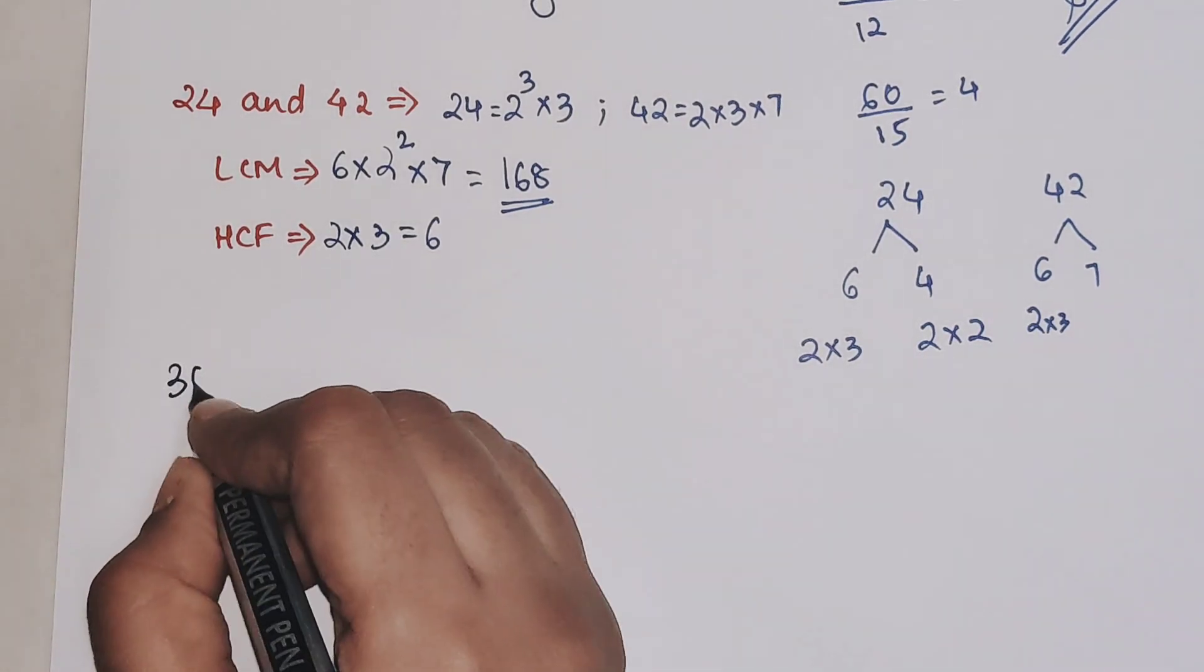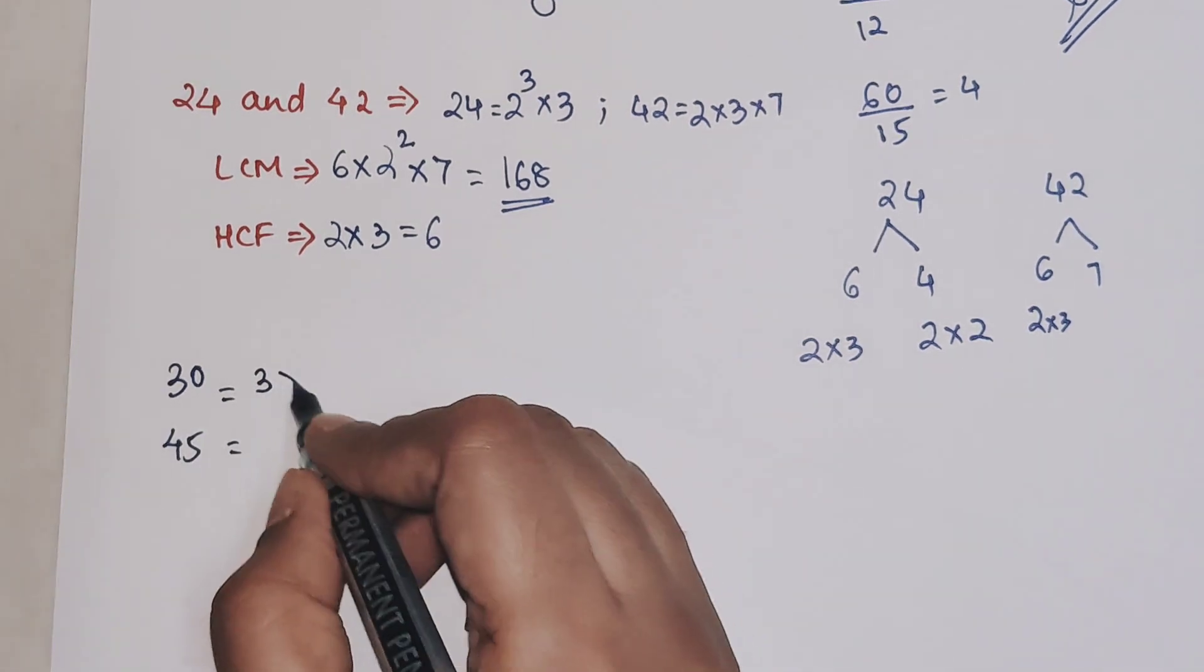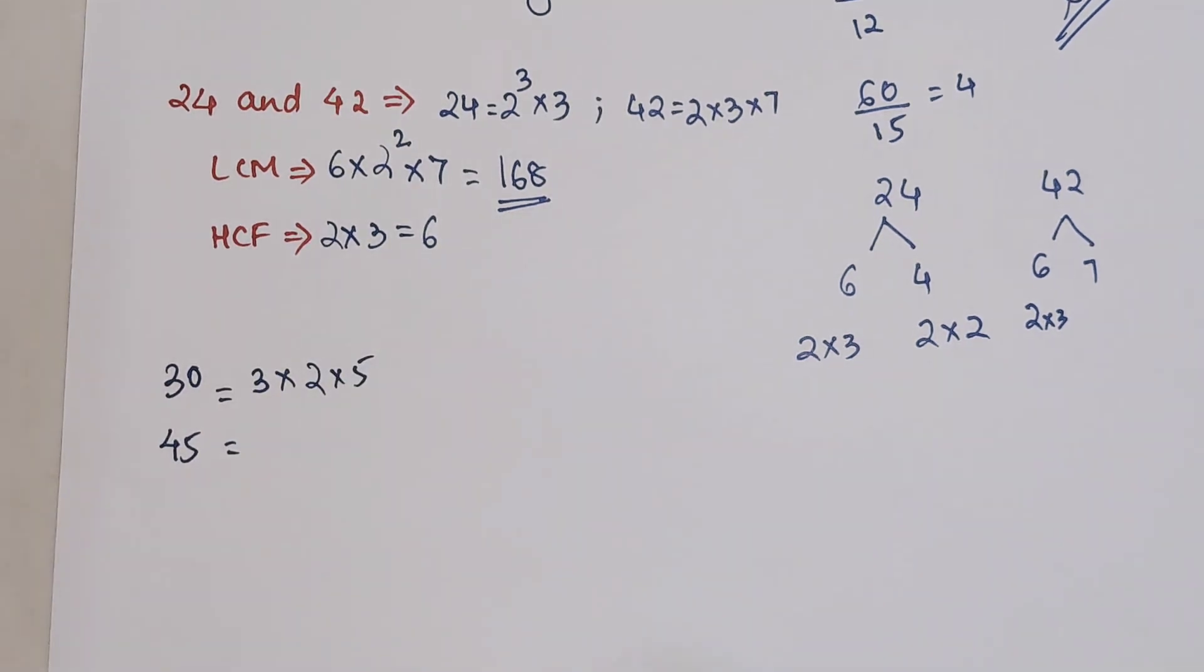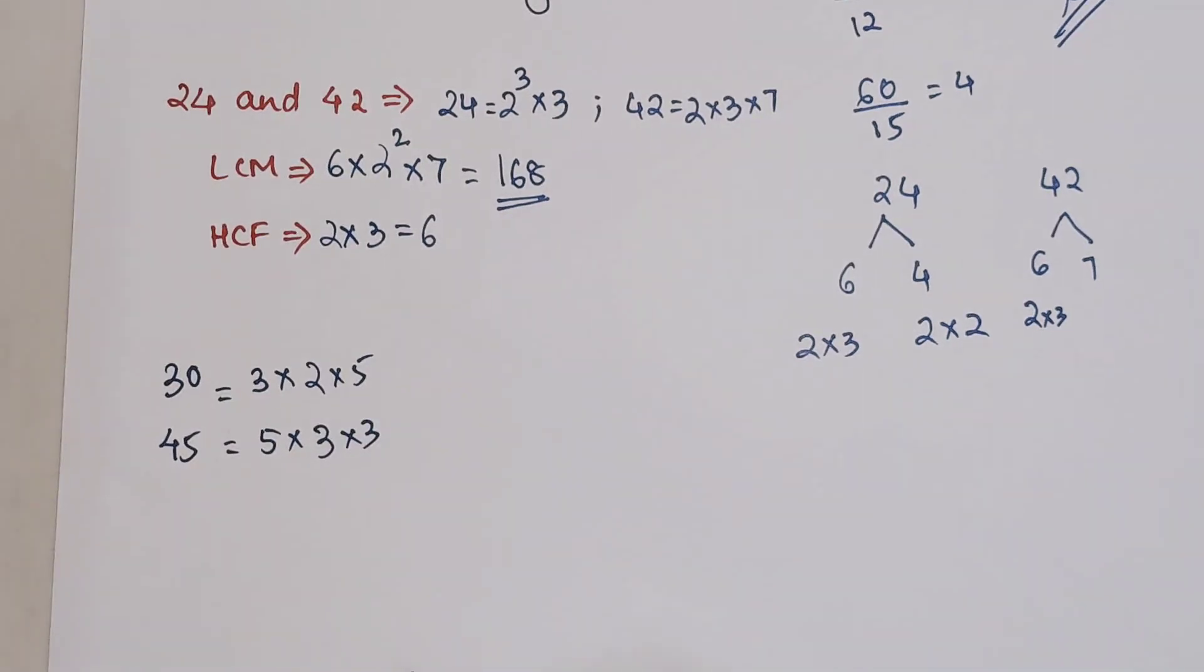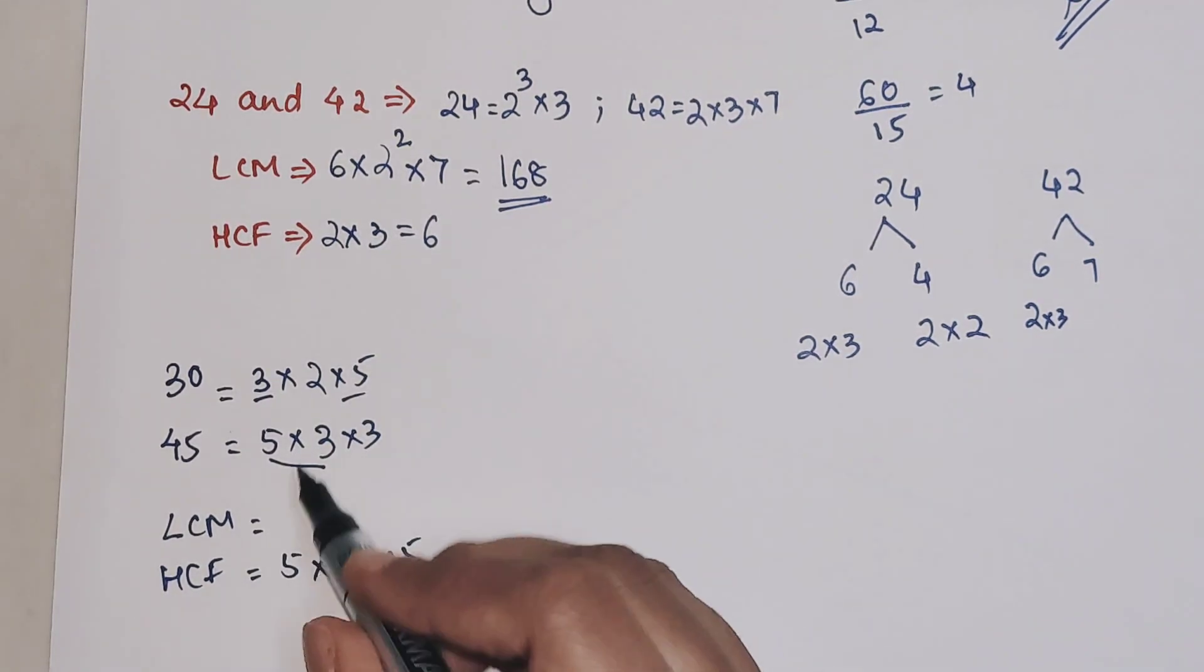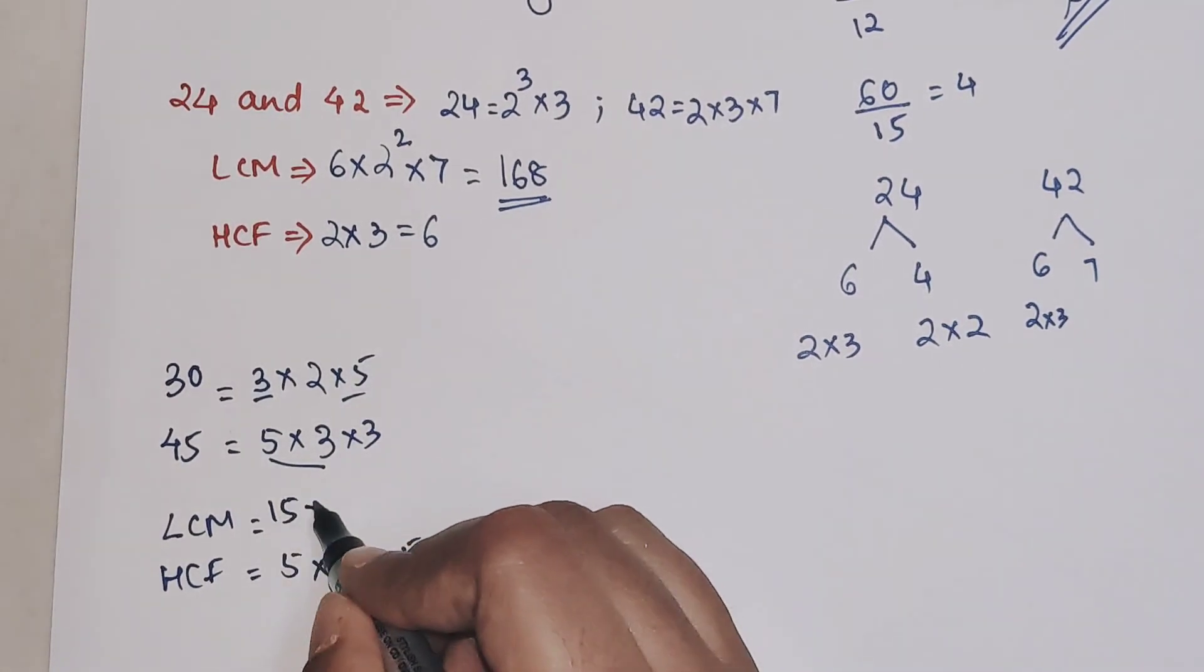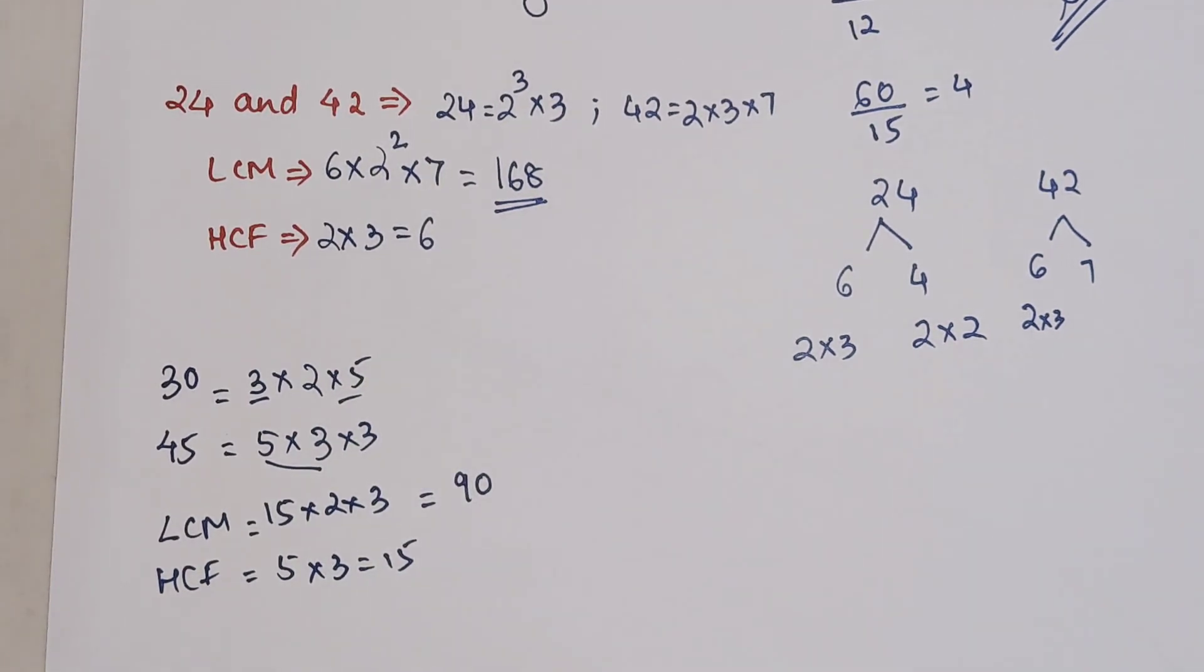Now let's take one more. Let's do this without the factor tree - 30 and 45. 30 is 3 into 10, and we can do this orally. 10 can be written as 2 into 5. 45 is 5 into 9, and 9 is 3 into 3. So your HCF is 5 and 3 which is common, so 5 into 3 gets you 15. And your LCM will be multiplying the rest of the numbers, that is 2 and 3. So 15 into 2 into 3 gets you 90. That is your LCM.